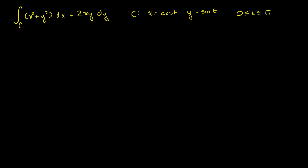So now our path, if I were to draw it on the xy-plane — there is my y-axis, there is my x-axis — our path isn't all the way around the unit circle. Our curve C just starts at t equals 0 and goes all the way to π. So that's our path in this example. It's not a closed path.